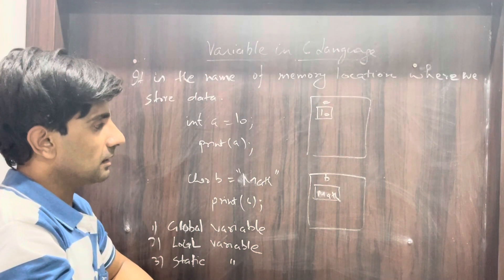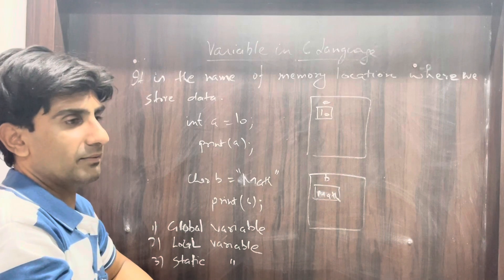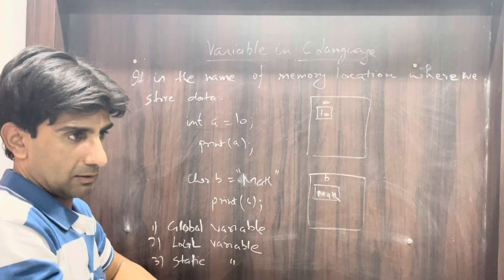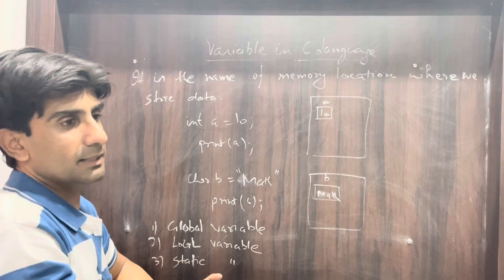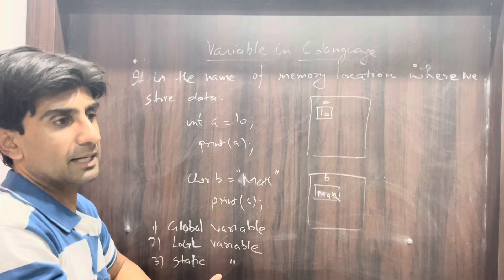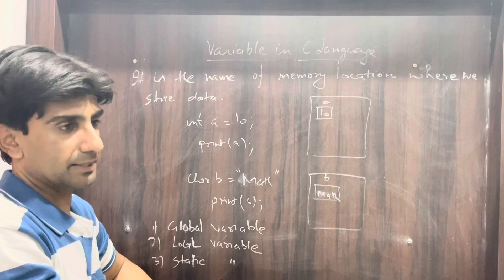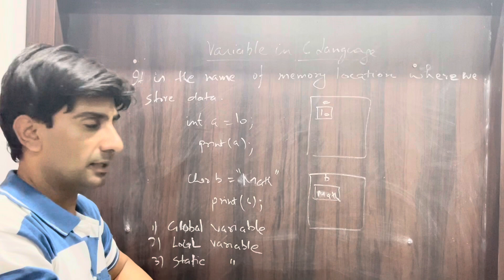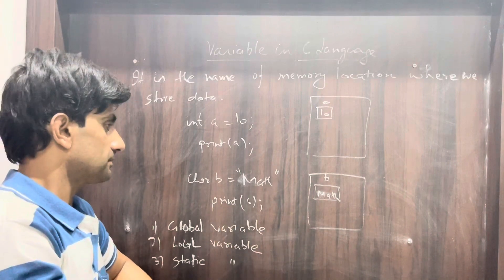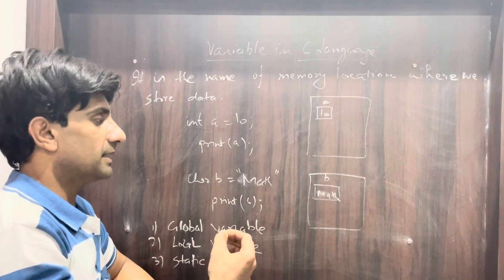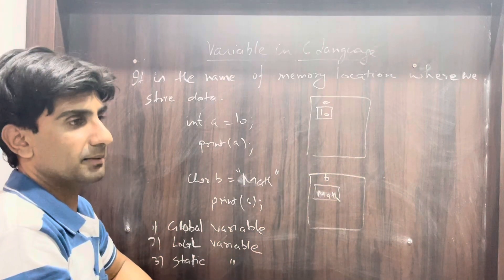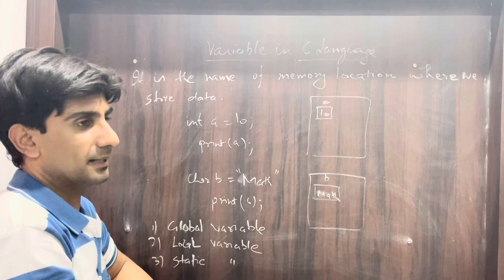Similarly, if I create another block of memory that is used by the character data type, then I will be able to store characters in that block. Suppose I created a block and gave it the name 'b', and this block has memory of the character data type.